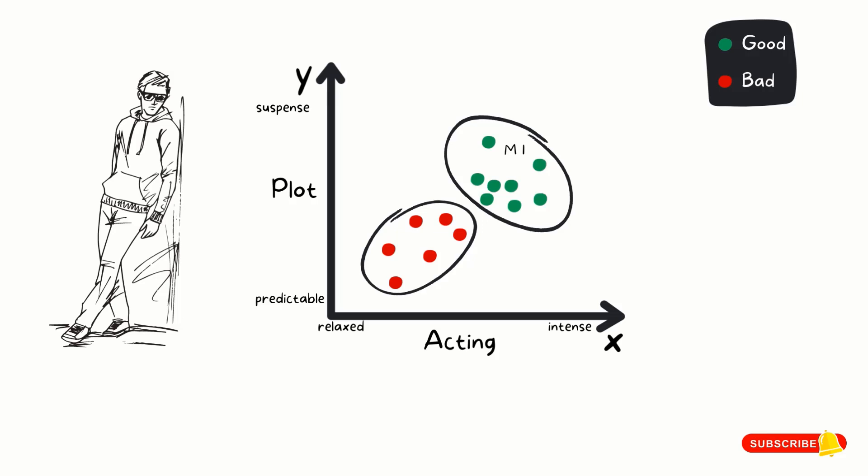Let's say again that Fred watches another movie, call it movie 2, and movie 2 lies somewhere here, with medium plot and medium acting. That is, neither predictable nor high suspense, neither relaxed nor intense acting. Can you guess whether Fred would like the movie or not? Now the choice has become complicated because of the in-between factors, so we are not able to determine Fred's choice for movie 2 as easily as we did for movie 1.